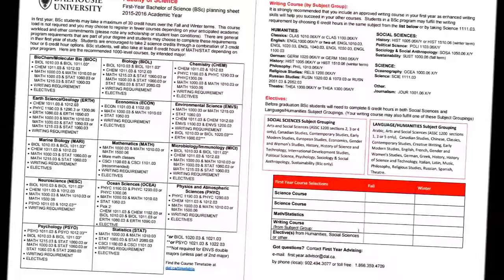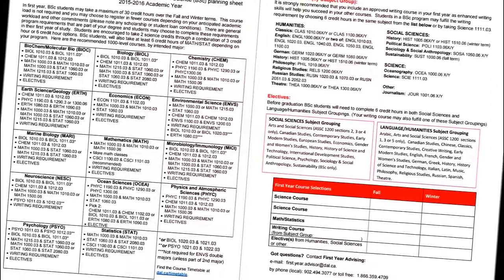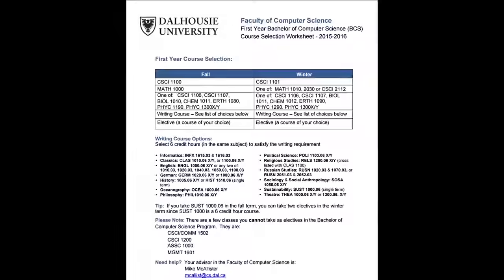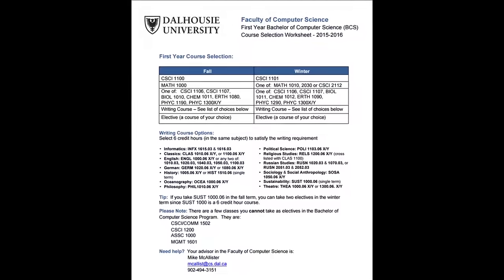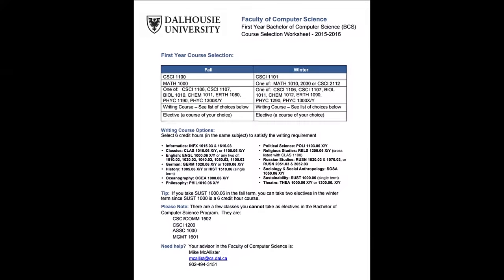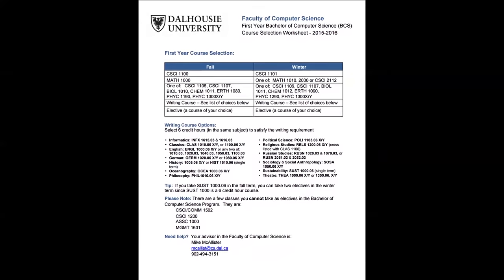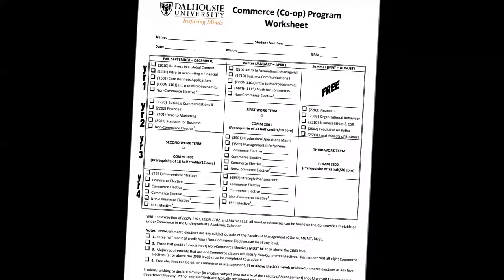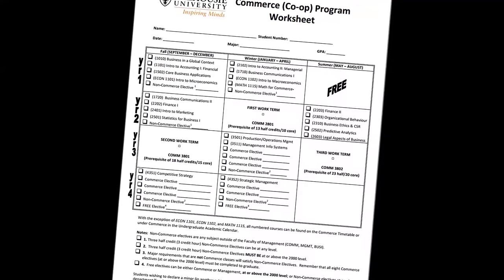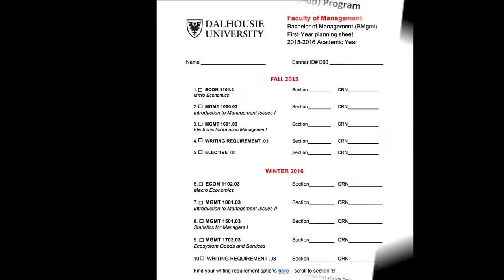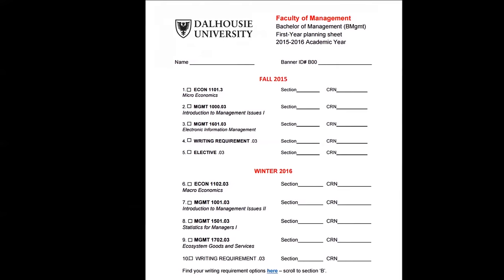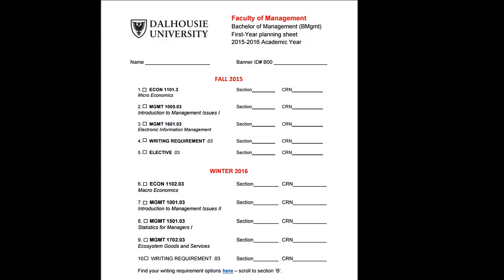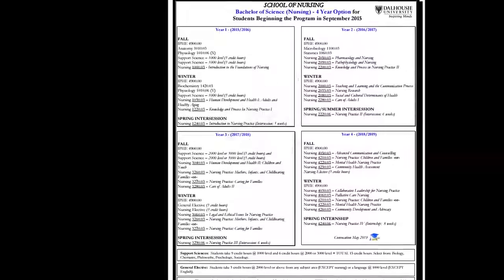All programs have some general degree requirements. No matter what you plan to major in, you have certain requirements that you need to complete before you can graduate. Your worksheet will tell you what these general degree requirements are and provide you with registration advice for your first year. It's a tool you'll want to refer to and use to plan your courses.